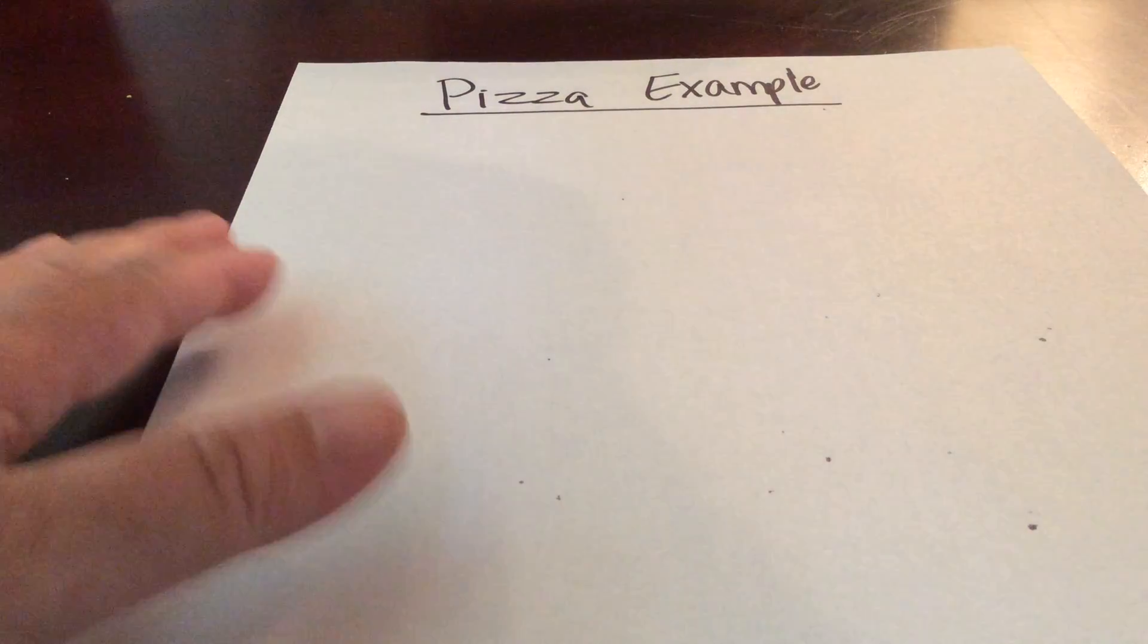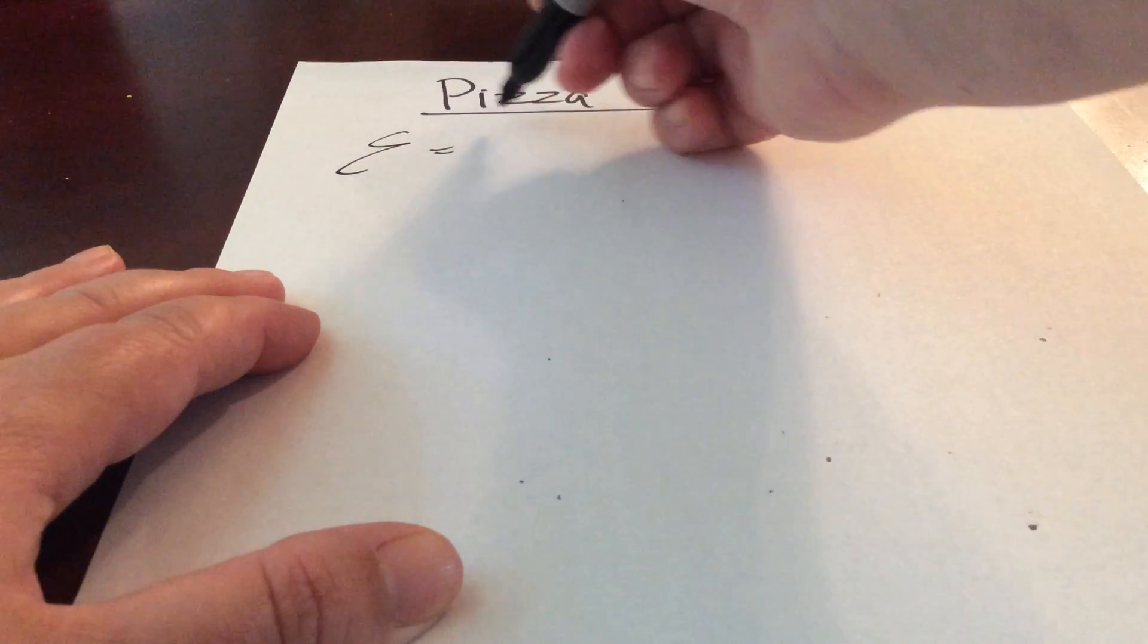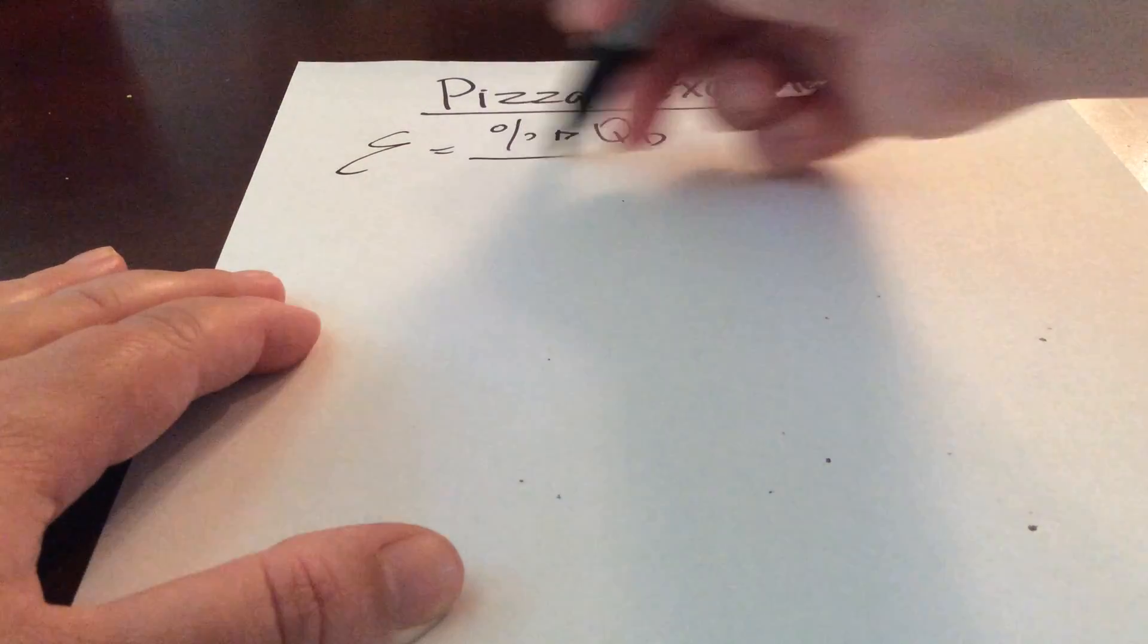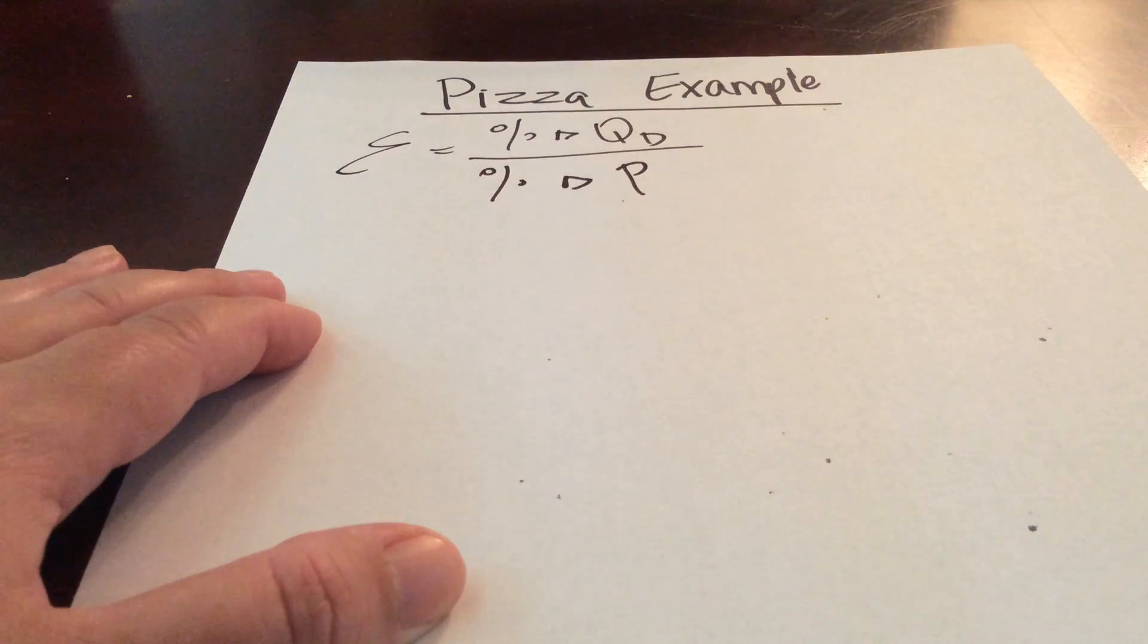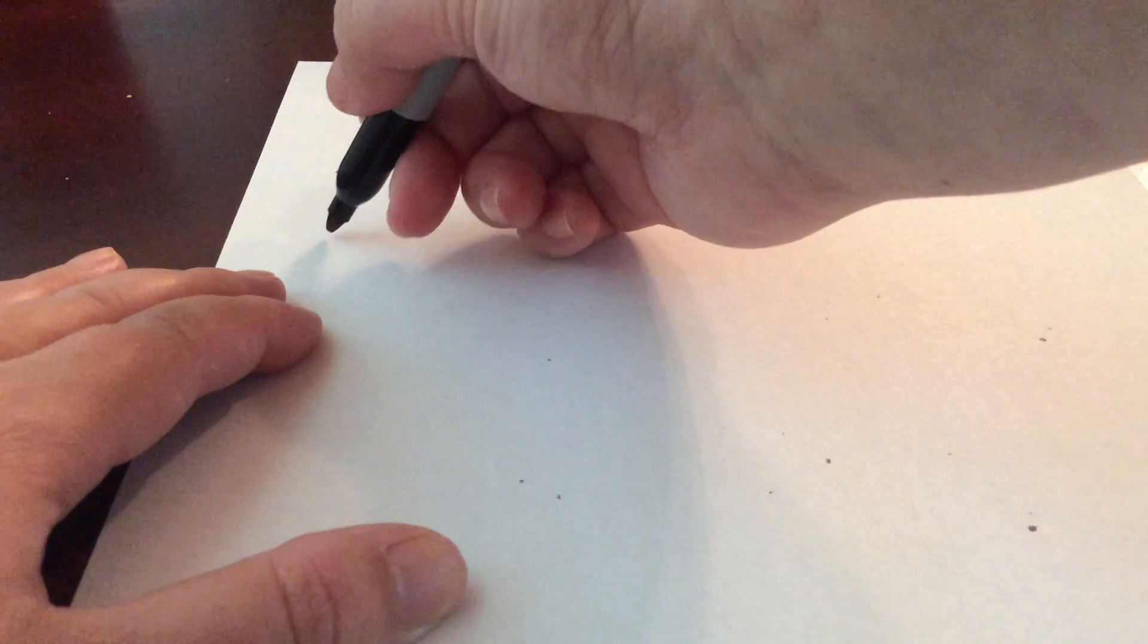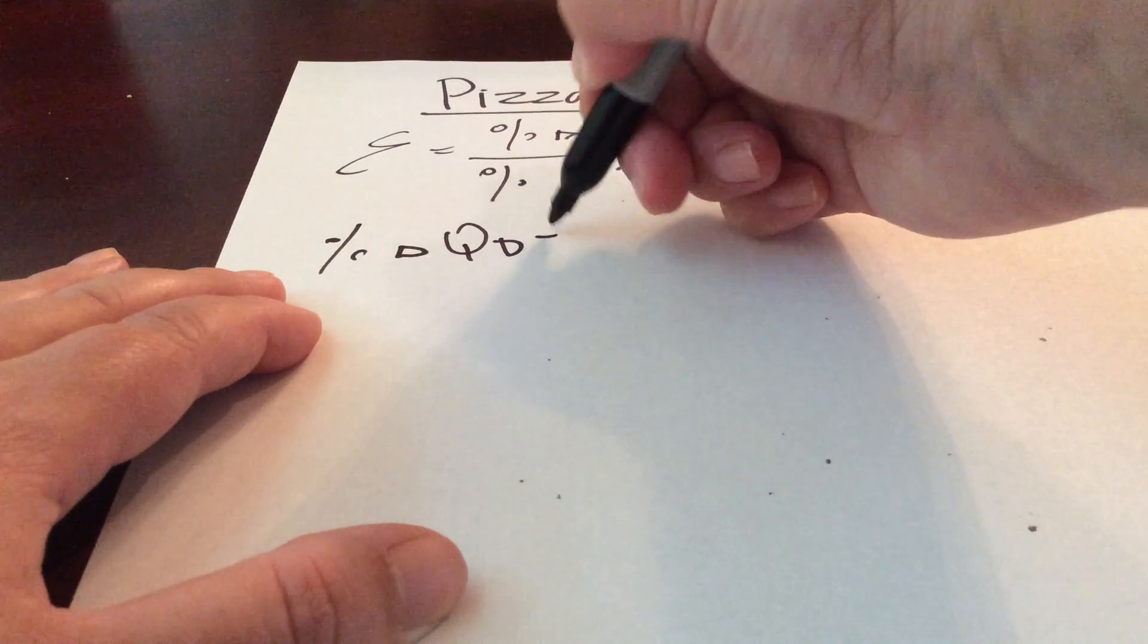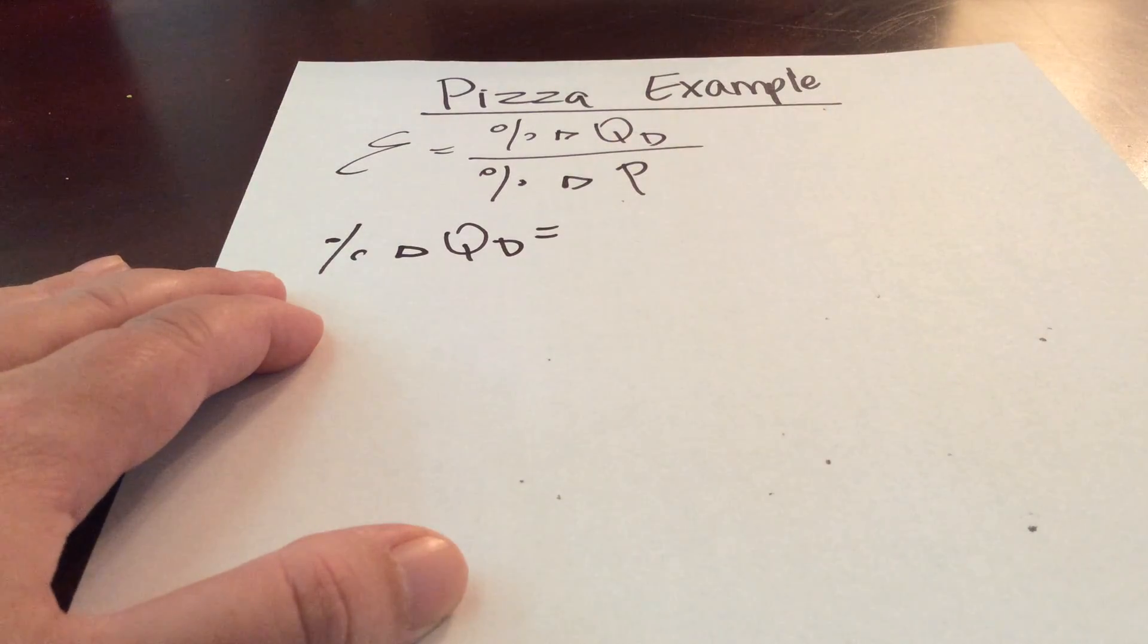So we're going to calculate our percentage change in quantity demanded divided by our percentage change in price. So let's start with the percentage change in quantity demanded.